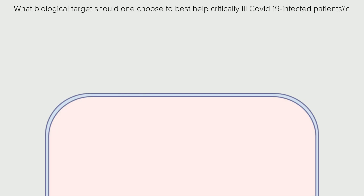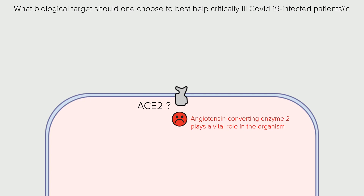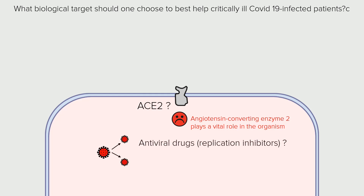What biological target should one choose to best help critically ill patients? Is ACE2 a good target? We don't think so — ACE2 plays a vital role in the organism, and the safety of ACE2-binding drugs may be a major issue. How about drugs that would inhibit viral replication? While these may work to some extent, they are unlikely to help develop immunization that is ultimately necessary for healing. This leaves us with AT1R, and we believe this is a better choice, by far.